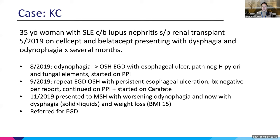She initially presented to an outside GI in August of 2019. The outside GI performed an EGD which showed an esophageal ulcer, and path was sort of negative for everything. She was started on a PPI, didn't get better, and was re-scoped in September of the same year showing persistent ulceration. Again, biopsies were negative per report. They continued her on the PPI and then started her on Carafate.